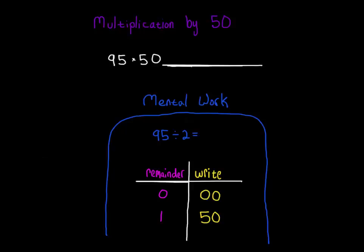95 divided by 2. 2 goes into 9, 4 times remainder 1. 2 goes into 15, 7 times remainder 1. So 95 divided by 2 is 47 remainder 1, which means 95 times 50 is 4750.